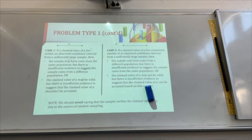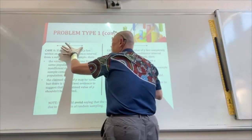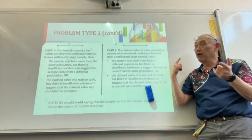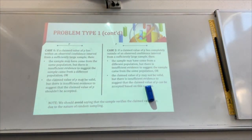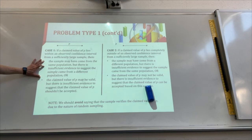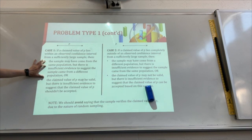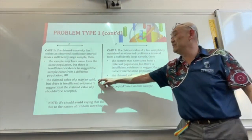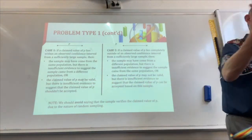Problem type one: when you're given a population proportion via a claim or historical data, we can comment on whether the claim or the data is supported by a sample from the same population. P could be inside the sample confidence interval or outside — it's either in or out. Case one: if a claimed value of P lies within an observed confidence interval from a sufficiently large sample, then the sample may have come from the same population, but there's insufficient evidence to suggest that the sample came from a different population. Or: the claim value of P may be valid, but there's insufficient evidence to suggest the claim value of P shouldn't be accepted.